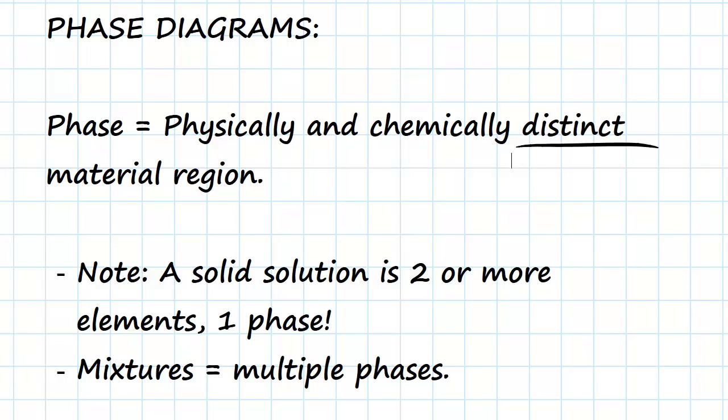Well, even though we have two or more elements, in this case a solid solution is still only one phase. The secondary material is integrated into the primary material, but this doesn't create physically or chemically distinct regions.